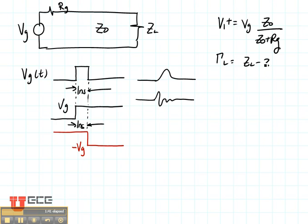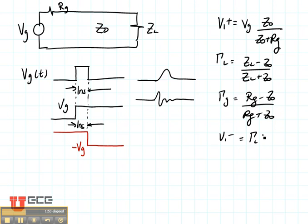Our two reflection coefficients, one at the load and one at the generator. And we have V1- which is the reflection coefficient at the load times V1+, V2+ which is the reflection coefficient at the generator times V1-, V2- which is the reflection coefficient at the load times V2+, and so on. We do all of those calculations exactly the same.